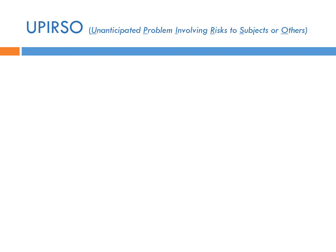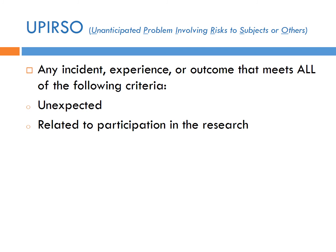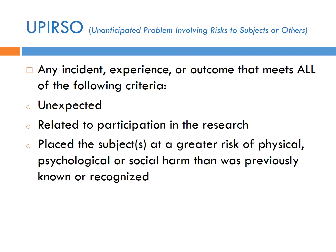A UPIRSO — unanticipated problem involving risk to subjects or others — is any incident, experience, or outcome that meets all of the following criteria: it must be unexpected, related to participation in the research, and — importantly — it places the subject at greater risk of physical, psychological, or social harm than was previously known or recognized. UPIRSOs are very uncommon, but they are important things to report.